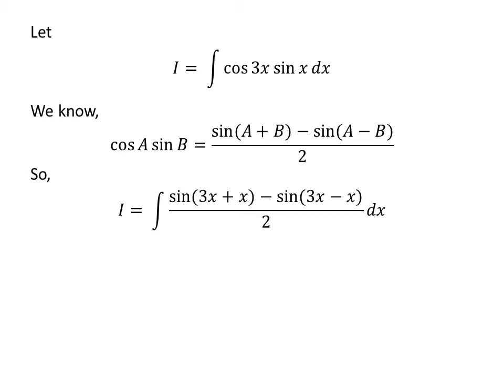So, i is equal to the integral of sine of 3 times x plus x minus sine of 3 times x minus x, upon 2, with respect to x. This simplifies to i is equal to the integral of sine of 4 times x minus sine of 2 times x, upon 2, with respect to x.